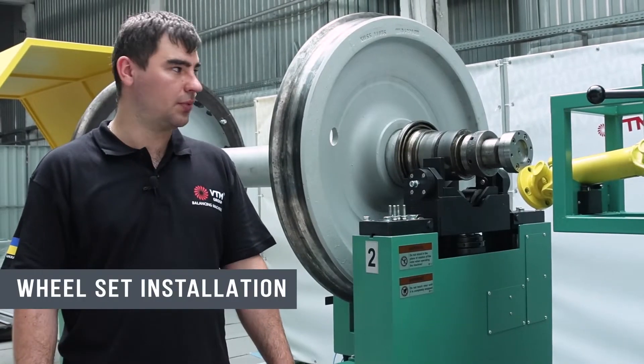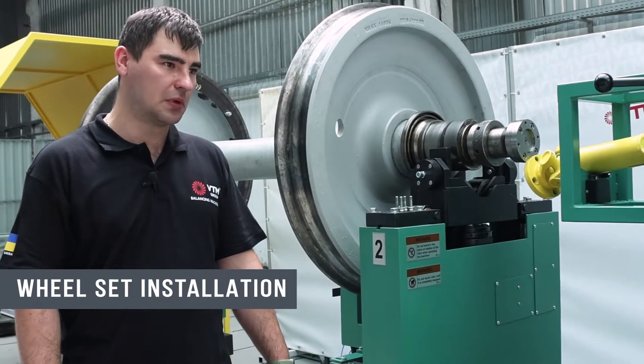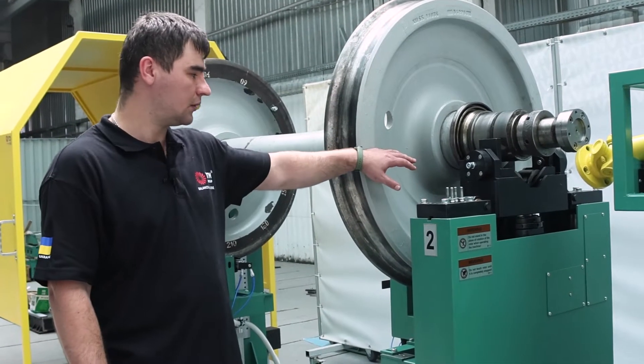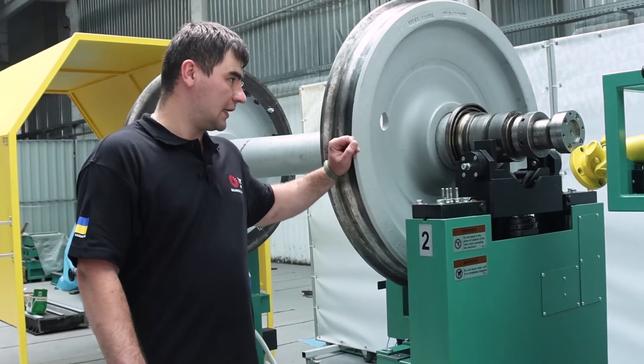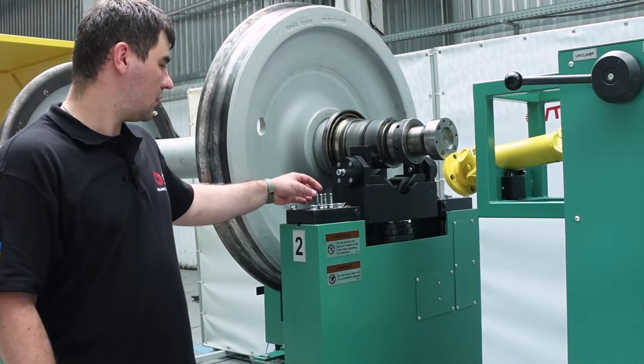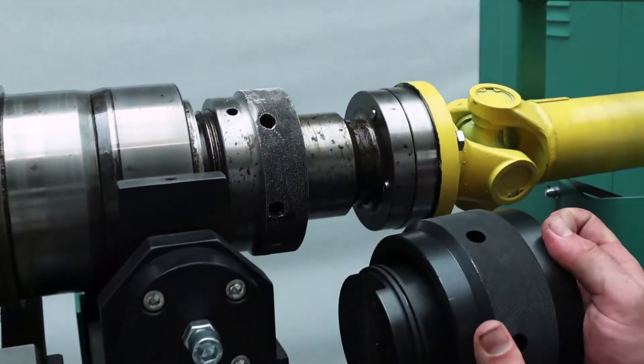Installing the wheelset: First of all, we fasten the adapter to the wheelset, after which we install the wheelset on the jacks with a crane. After that, we connect the cardan to the wheelset using the bolts and adapters included in the kit.